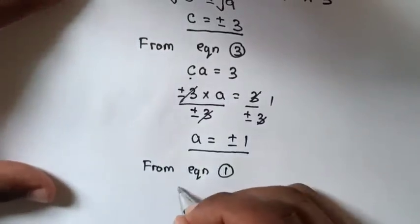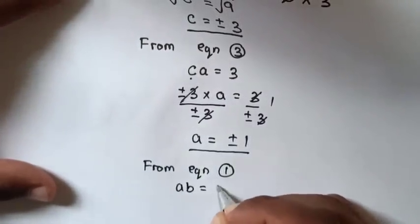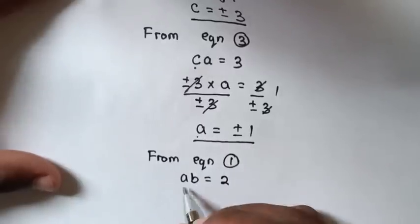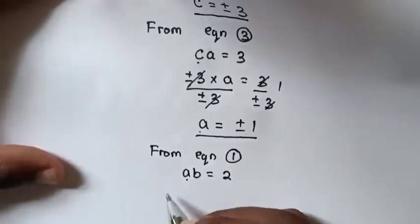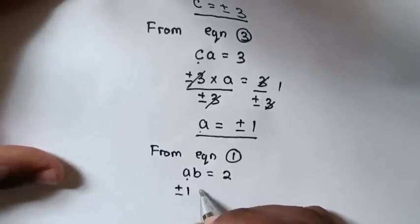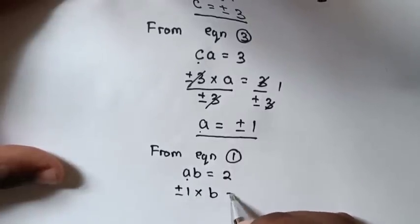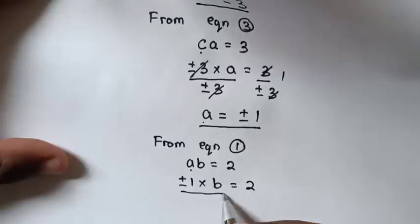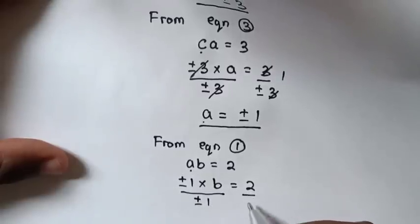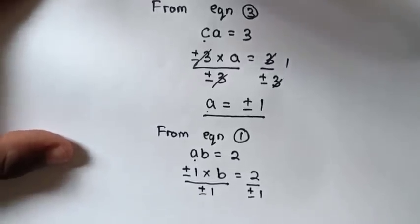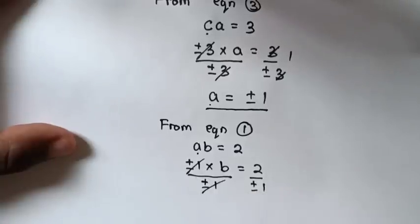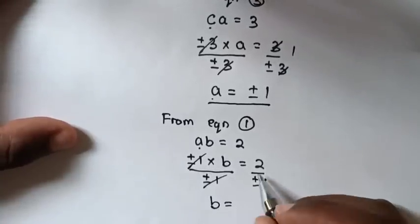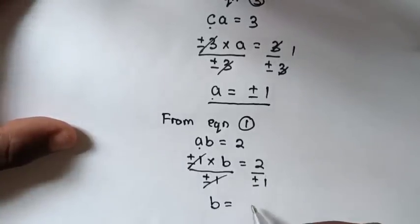AB equals 2. We already know the value of A, which is plus or minus 1. So plus or minus 1 times B equals 2. We divide both sides by plus or minus 1, so those cancel, and B equals 2 divided by 1, which is plus or minus 2.